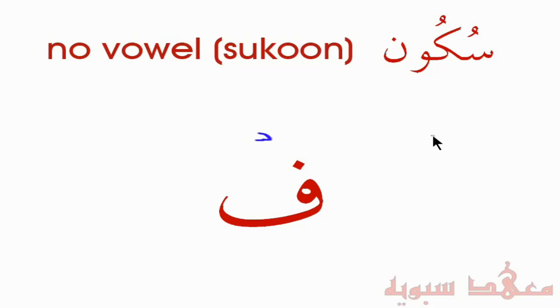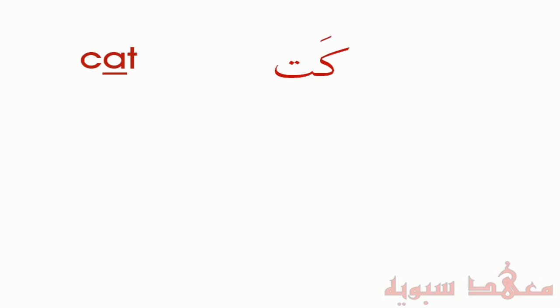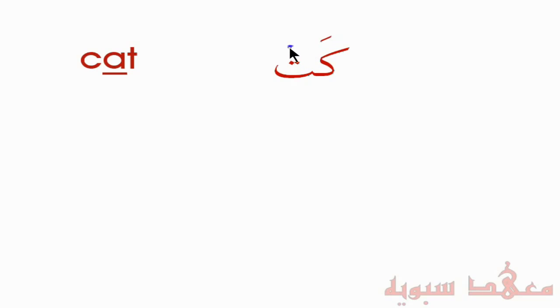Now let's look at some examples. If you remember the last video, we went through these words and I transliterated the words into Arabic. That's 'cat', both in Arabic and English. We have a haraka there with the kaf, and then notice there's actually a stop on the letter T — we say 'cat'. The T doesn't have any vowel associated with it; it's just a stop on the T. So in this case, we would put Sukun there. Cat.